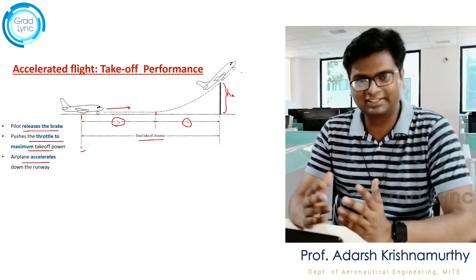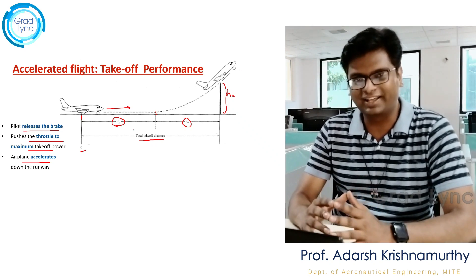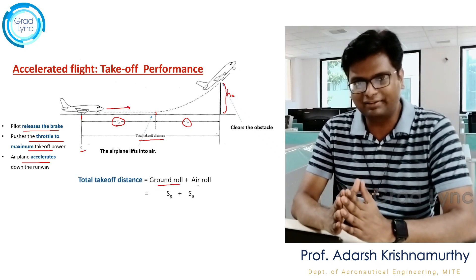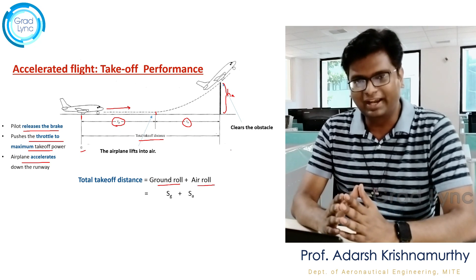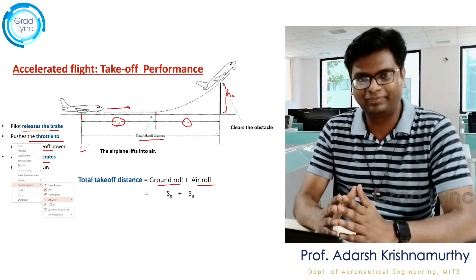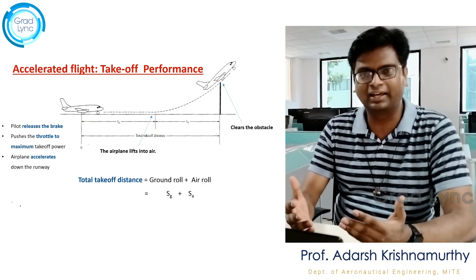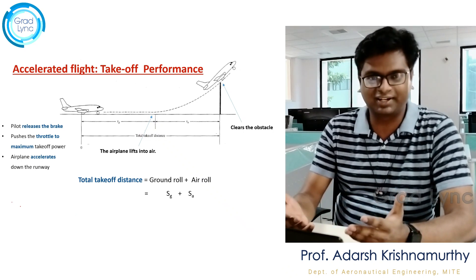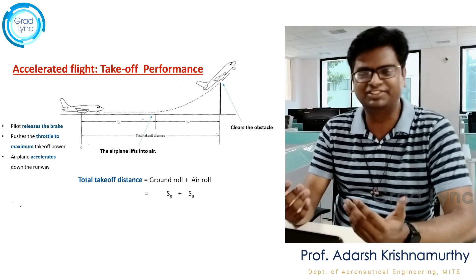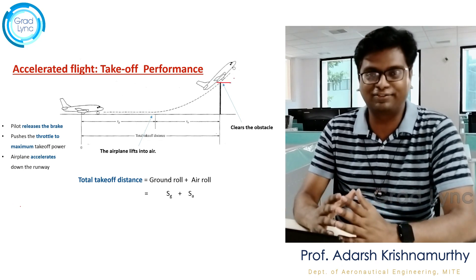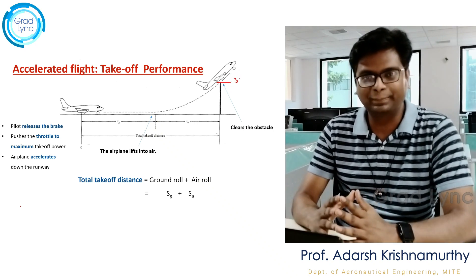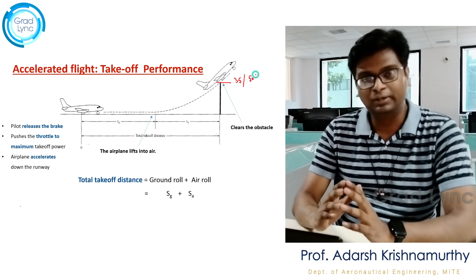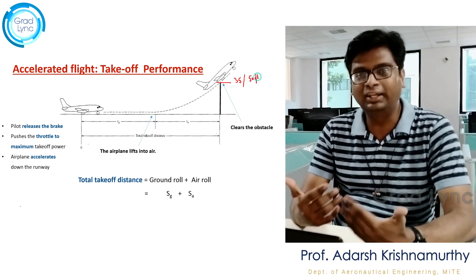At a distance SG the aircraft leaves the ground, and from there at a distance SA the aircraft clears a predefined obstacle — that is called a successful takeoff. SG is called the ground roll and SA is called the air roll, because the distance covered when the aircraft is on the ground is SG and when it is airborne is SA. The obstacle height is fixed at around 35 feet for passenger aircraft and 50 feet for military aircraft. The total takeoff distance is the sum of ground roll and air roll.